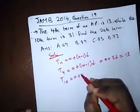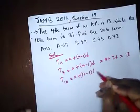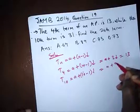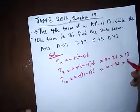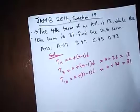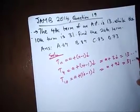And our 10th term is A plus 10 minus 1 bracket D, which will give us A plus 9D, which is 31 according to our question. So this is equation 1, equation 2.